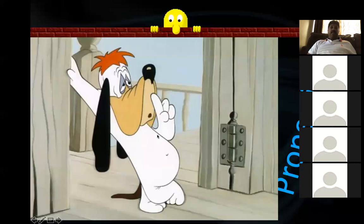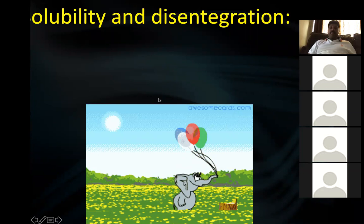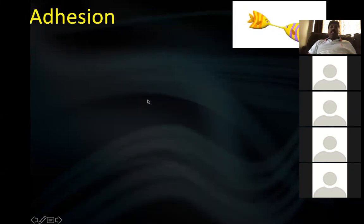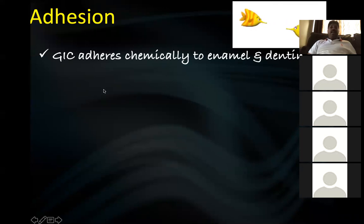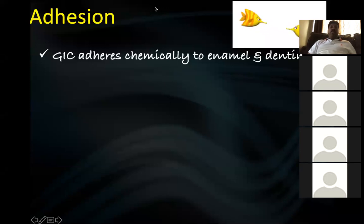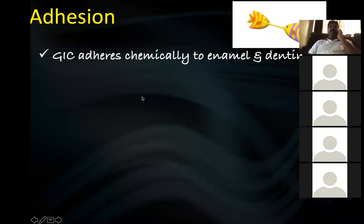Key properties of GAC: One major property is adhesion. Silver amalgam is only mechanically adhered to the tooth structure, whereas GAC is chemically adhered. GAC is the only cement that is chemically bonded to the tooth structure — no other cement achieves this. This is a very important viva question. If asked to name one material chemically adhered to tooth structure, the answer is GAC.